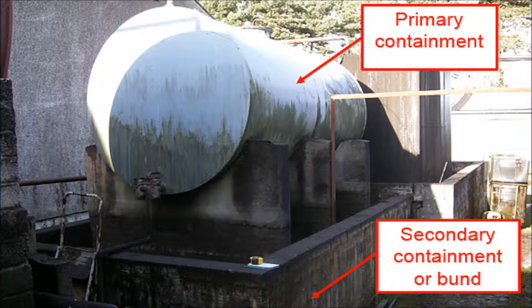A bond is a secondary containment. Its purpose is to contain any leak or spill from the primary containment. In this photograph, the tank is the primary containment and the wall surrounding the tank is the secondary containment.